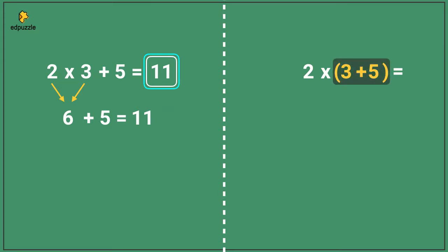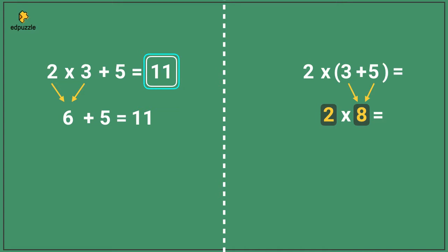So we must solve 3 plus 5 first, which equals 8. We have solved the expression in the parentheses, so we need to bring down the remaining parts of the original expression — the 2 and the multiplication symbol. Now we must solve 2 times 8. 2 times 8 is 16, so the value of the expression is 16.